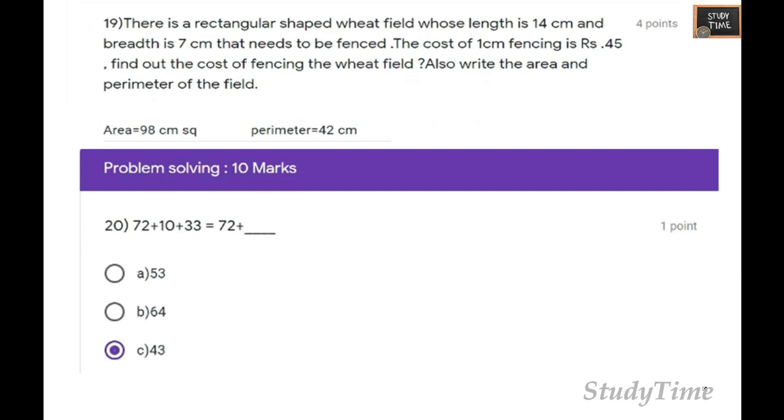There is a rectangle-shaped wheat field whose length is 14 centimeters and breadth is 7 centimeters. You have to find the area, perimeter, and cost of fencing.